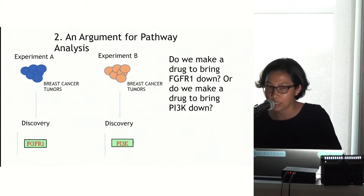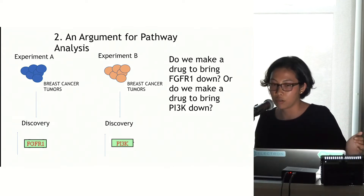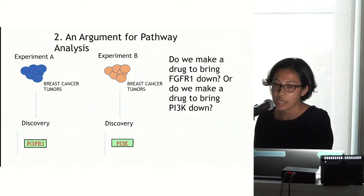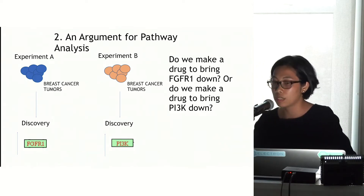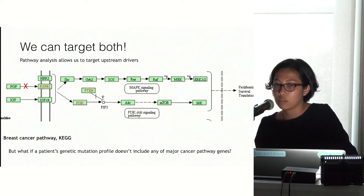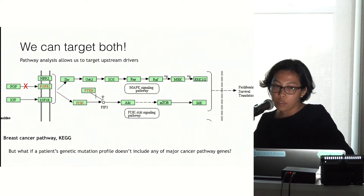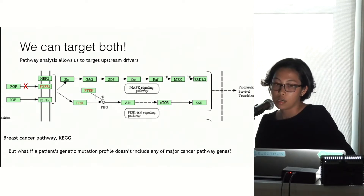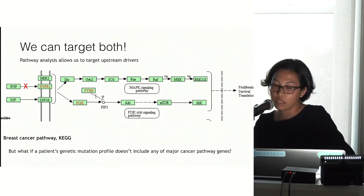So argument two is an argument for pathway analysis. Experiment A looks at breast cancer tumors and finds a mutation leading to overexpression of the gene FGFR1. Experiment B finds that those tumors also systematically have a mutation leading to overexpression of PI3K. The question is: do you make a drug to bring FGFR1 down or PI3K down? With pathway analysis, you can actually target both — by looking at their systematic biological function, you can target the upstream drivers, stopping the process earlier, like pressing a gas pedal earlier in the process, and inhibit the actions of both to prevent tumor growth.